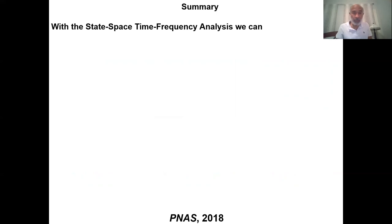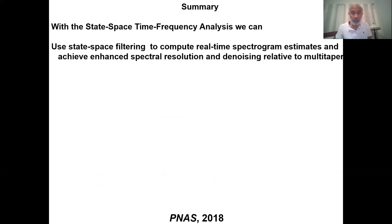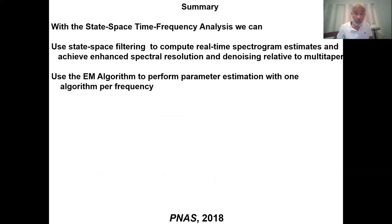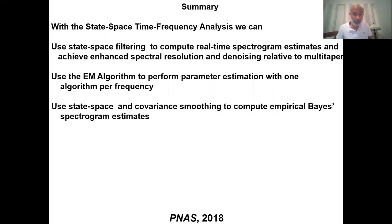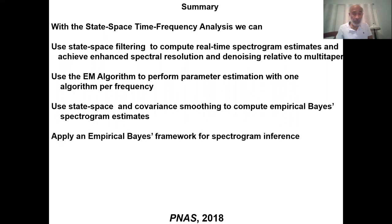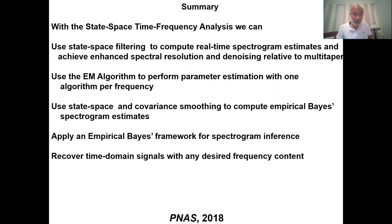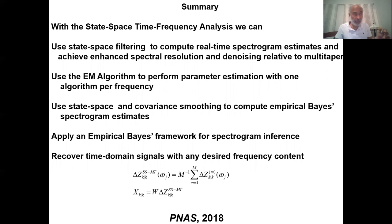In summary, the state-space time frequency analysis uses state-space filtering to compute real-time spectrogram estimates with enhanced spectral resolution and denoising relative to multi-taper methods. An EM algorithm performs parameter estimation independently per frequency and per taper. State-space smoothing yields empirical Bayes spectrogram estimates, enabling formal spectrogram inference. The method also recovers time-domain signals for any desired frequency band — an additional capability not available with standard multi-taper methods.